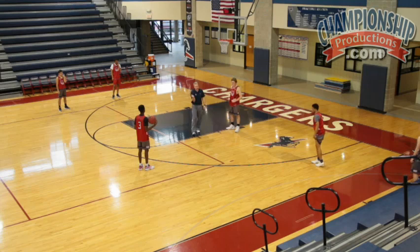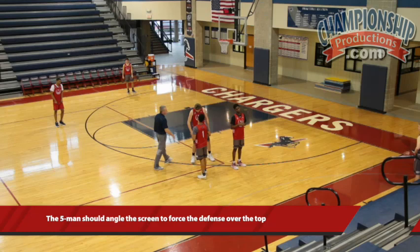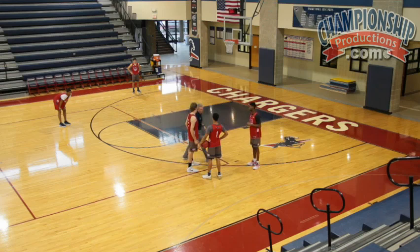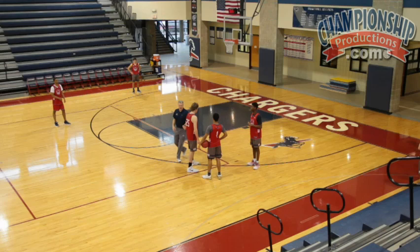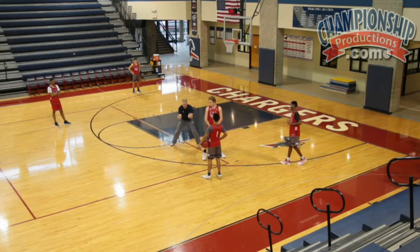Our two-man's got it. He's going to dribble hard towards our one-man, and we're starting to lift our five so that as this handoff is happening, our five is right here. Key teaching point: our five-man wants to angle his screen to force the defense over the top. We don't want to angle our screen the other way where we're forcing the defender to go underneath. We want him to go over the top and give our one-man a chance to attack off the screen.